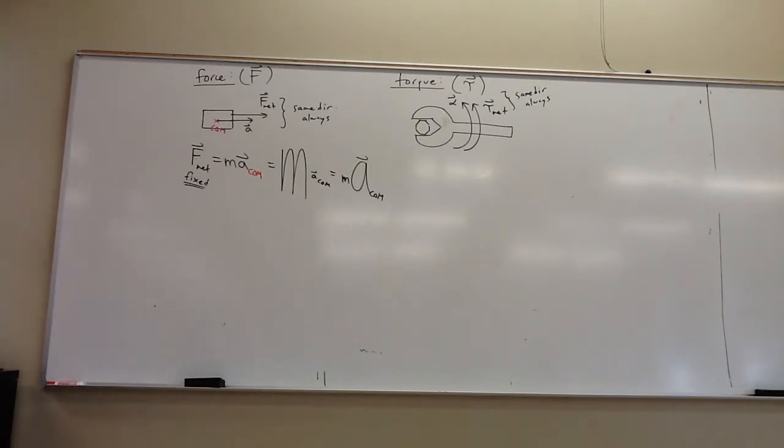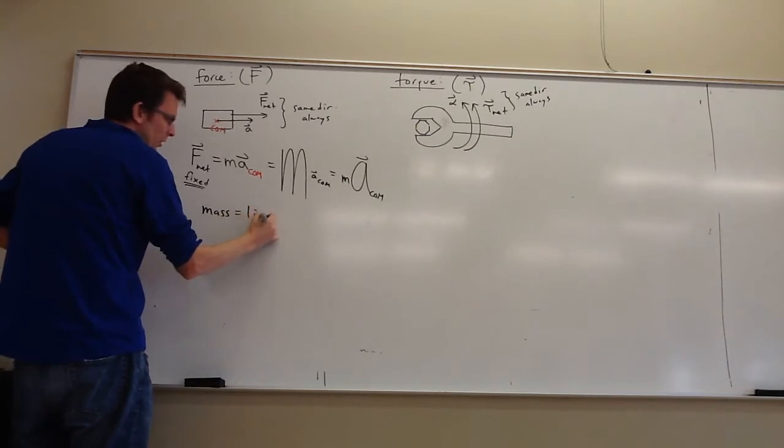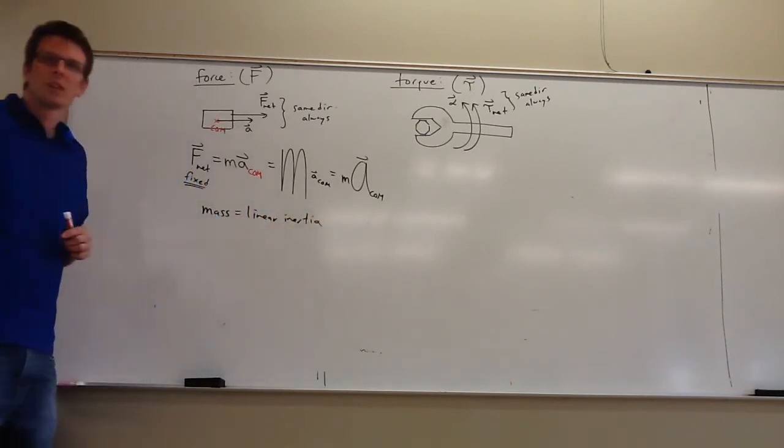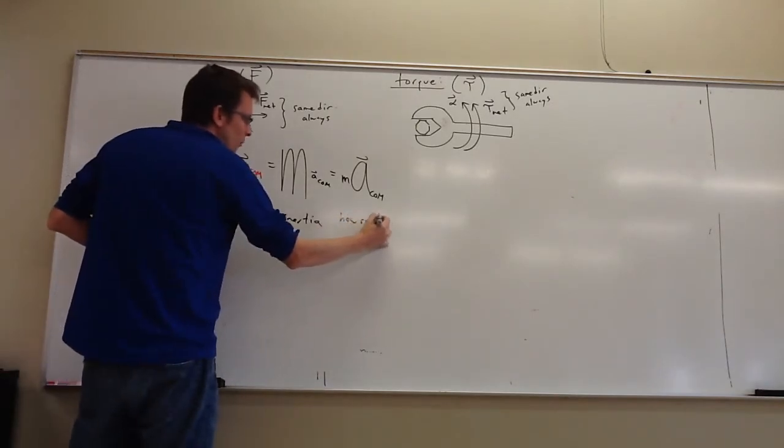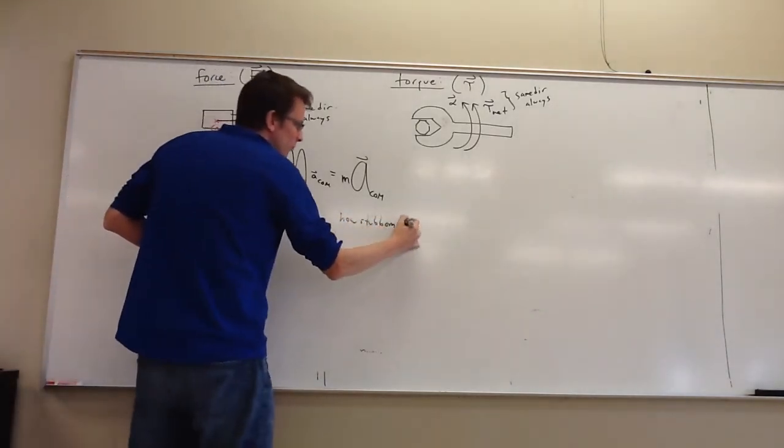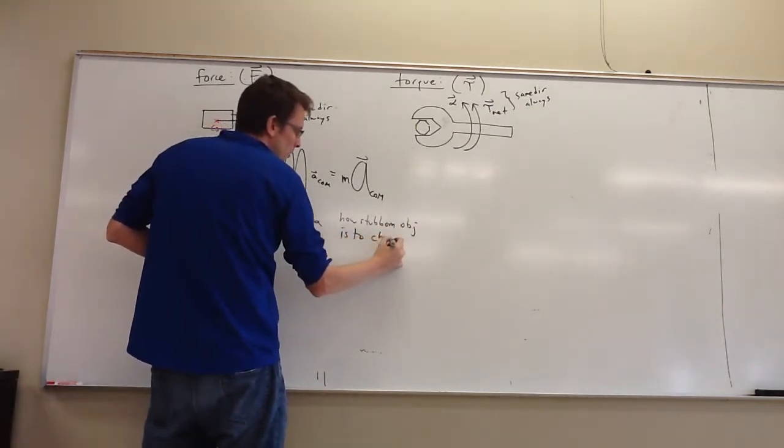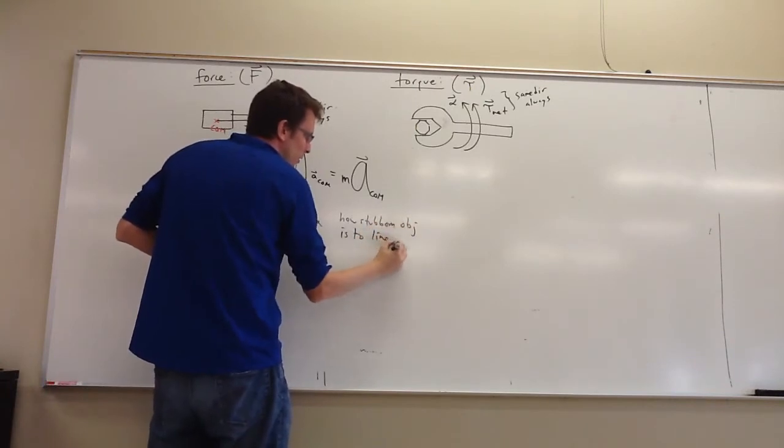So the linking ingredient is mass, which is this idea of linear inertia. This is how stubborn the object is to changes.